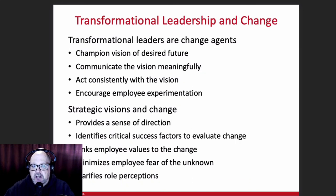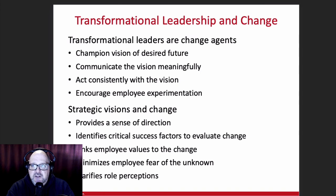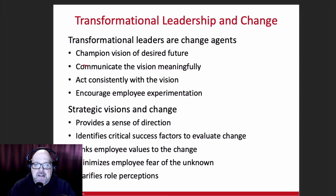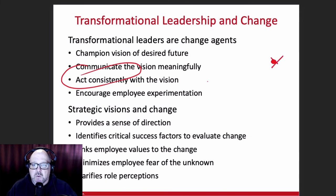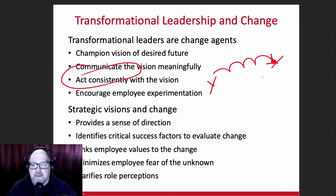Transformational leaders are change agents, and the transformational leadership style is one of the best styles to use in any kind of change model. Not only have they usually wrestled through the vision of what it's going to take to get the change started, initiated, and sustained, they can usually see the end result. When they see the end result, they begin to act consistently with the vision. If we have the vision over here of where we need to be, and here is where we are right now, transformational leadership knows the steps that have to occur for the organization to land on that new spot. As the leader takes those steps towards the new vision, they demonstrate congruency to the organization and it builds trust.